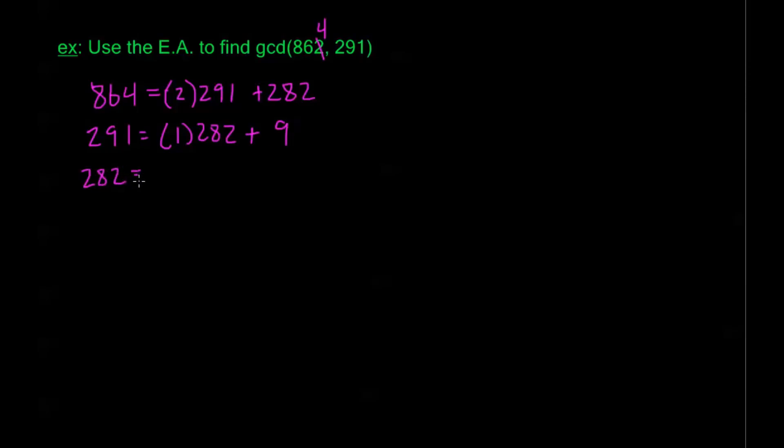282 is going to equal 31 times 9 plus 3. And 9 equals 3 times 3 plus 0. So, now I have a 0 remainder. My last non-0 remainder is my GCD by the proof we just looked at. So, the GCD of 864 and 291 is 3. We could have done the whole prime factorization. We would have done a lot of factors that didn't matter because it turns out the only thing they have in common is a single 3.